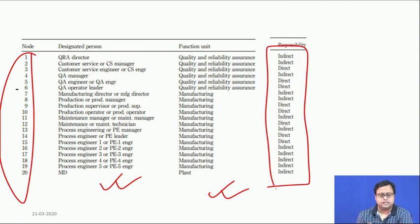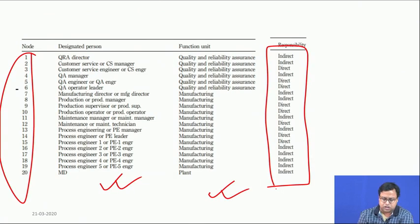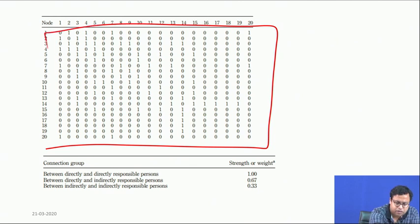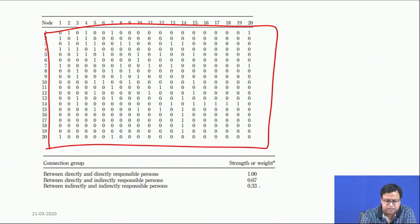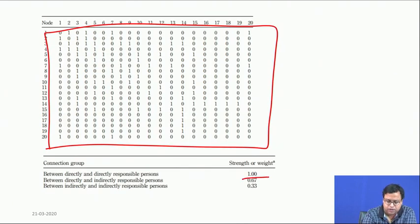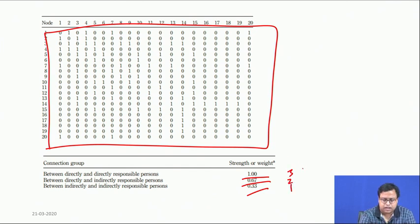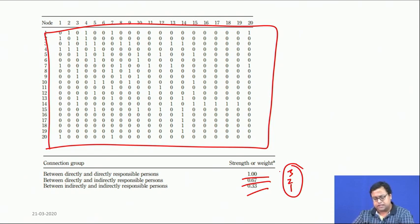With these 20 people, they created a 20-by-22 matrix. The connection weight is 1 when two directly responsible persons are connected, 0.67 when a directly responsible person is talking with an indirectly responsible person, and 0.33 for the rest. The ratio is 3 to 2 to 1. This weighting is somewhat subjective but was determined through discussion.